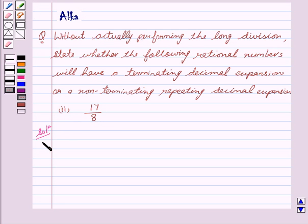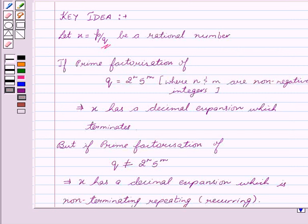So before starting with the solution, let me tell you the basic idea behind the question. Let x = p/q be a rational number. If prime factorization of q = 2^n × 5^m, where n and m are non-negative integers,